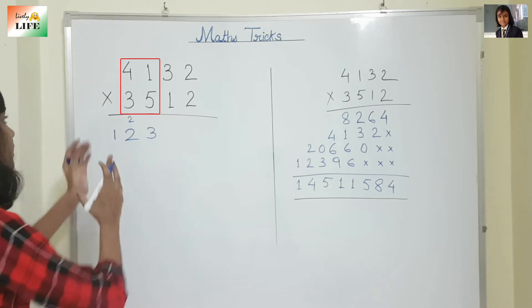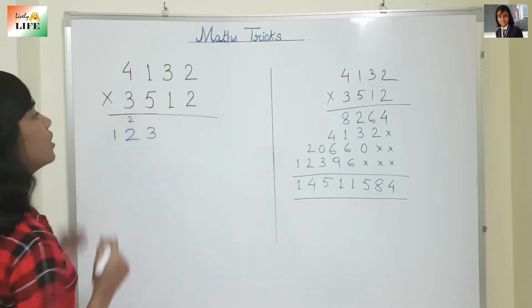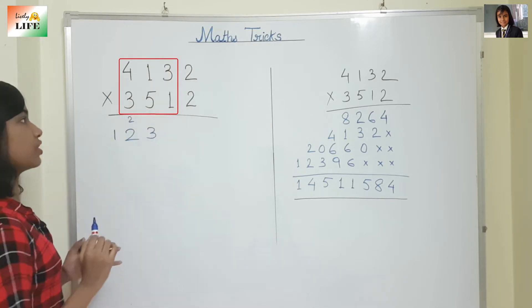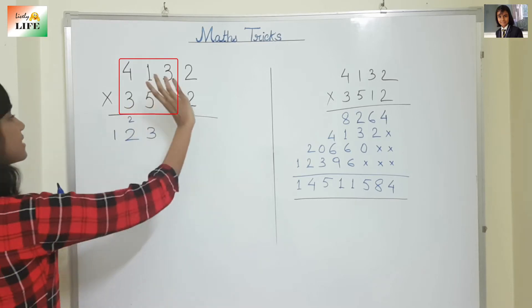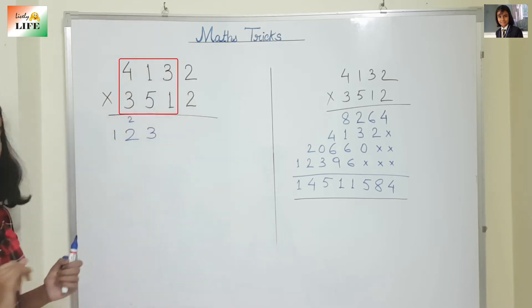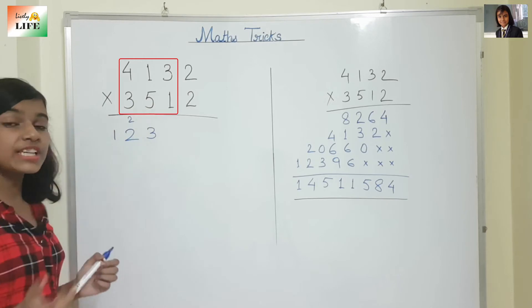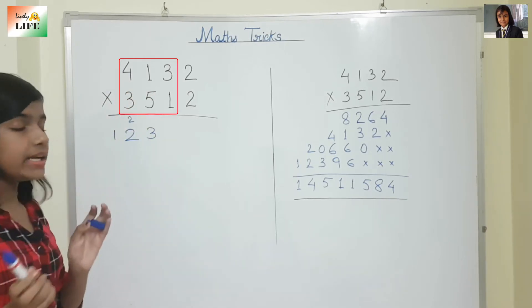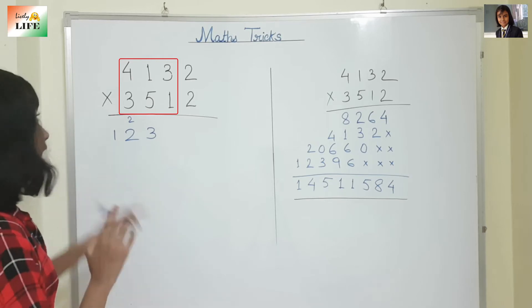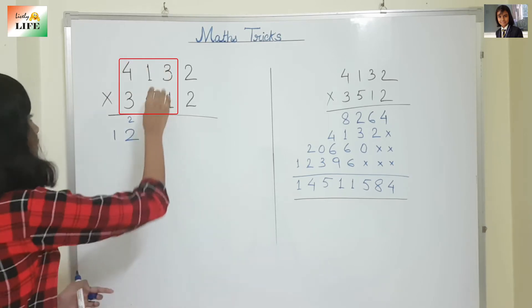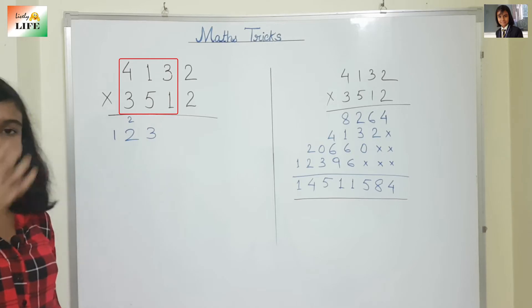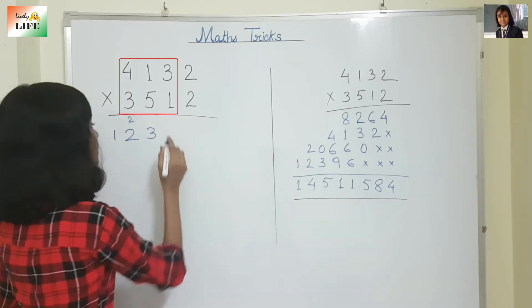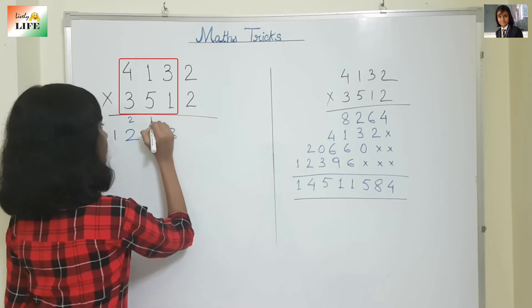Now the third column has 3 cross multiplications. We cross multiply this with this, this with this, and this with this. 3 threes are 9, 4 ones are 4, so 9 plus 4 is 13. And 5 into 1 is 5, so 13 plus 5 is 18. So we are going to write 8 and carry 1.